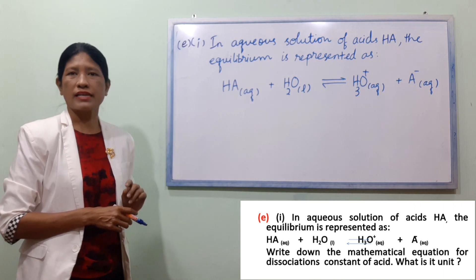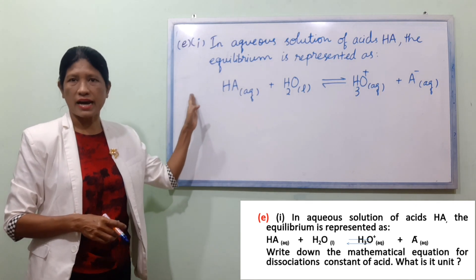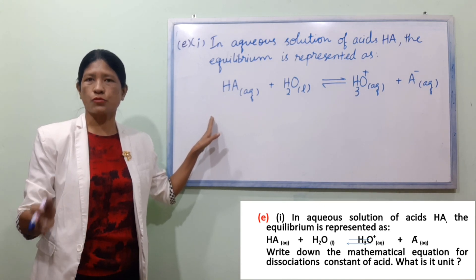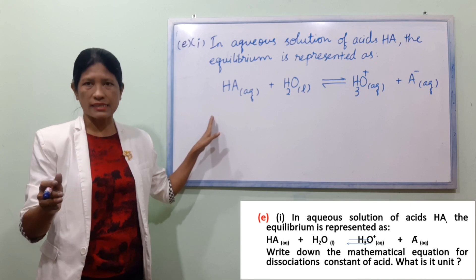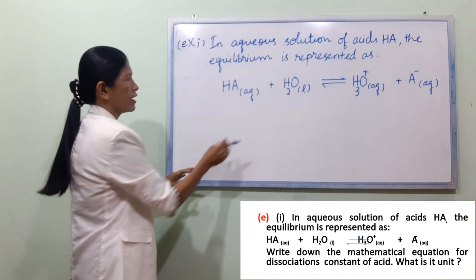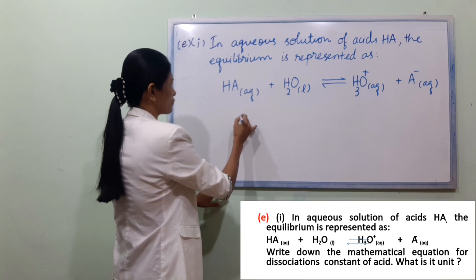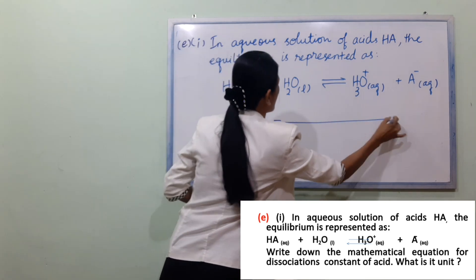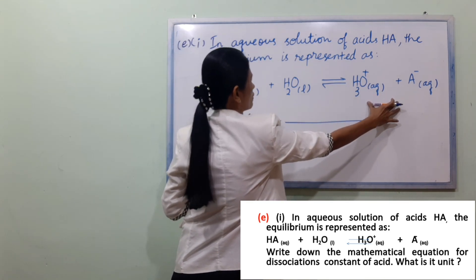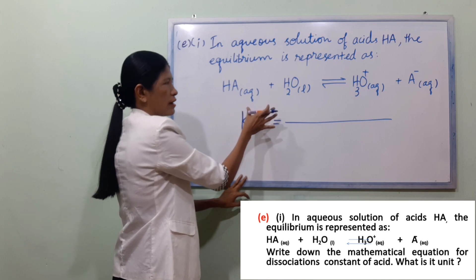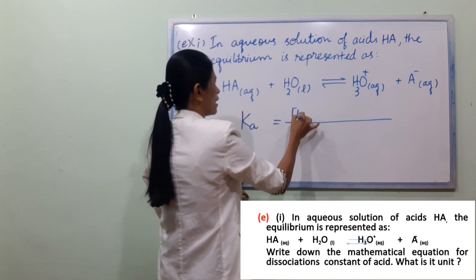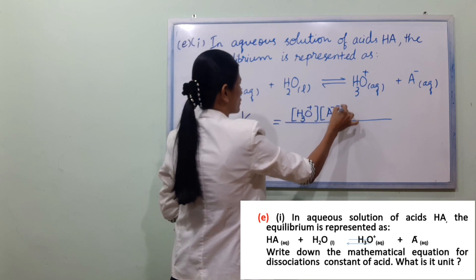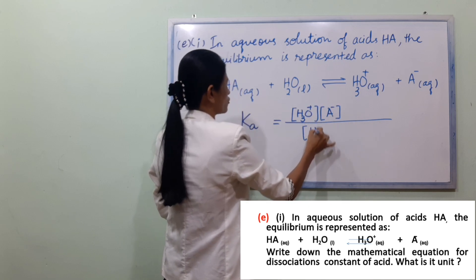The equilibrium is represented for S-C-H-A. Write down the mathematical expression of the dissociation constant for S. The equilibrium constant Ka will be done by the concentration of D. So, Ka equals H3O⁺ concentration multiplied by A⁻ concentration, divided by HA concentration.